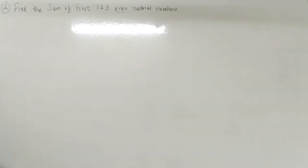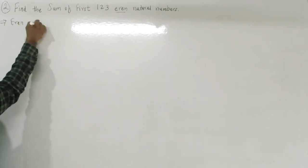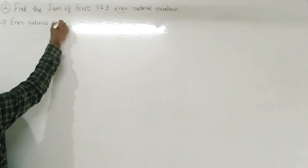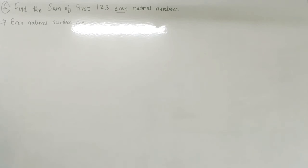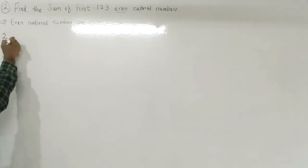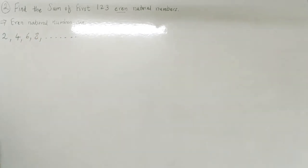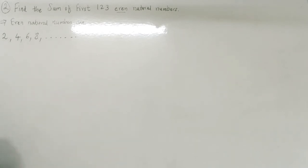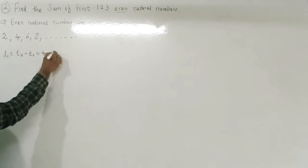Second example: find the sum of the first 123 even natural numbers. Even natural numbers are 2, 4, 6, 8, and so on. First we prove the given sequence is an AP.